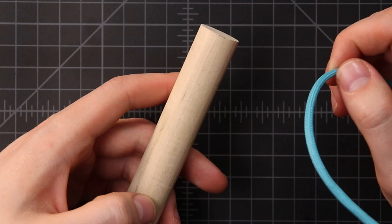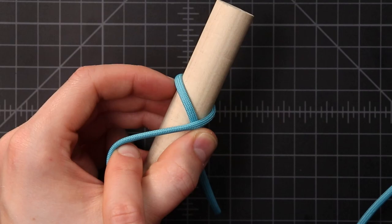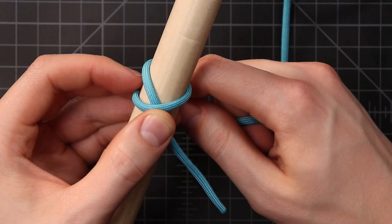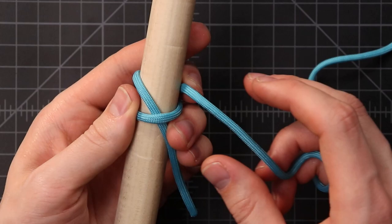So to start off we want to find the top of our mandrel or whatever we're wrapping, just gonna make it easier to wrap the cord around, and we want to lay the cord alongside it like that. I'm gonna wrap around to the left, bring it back to the front, and cross over our initial strand. Bring it around again, and we'll cross back up to the top on the backside.